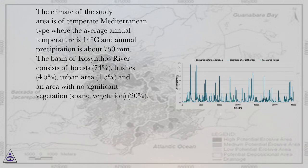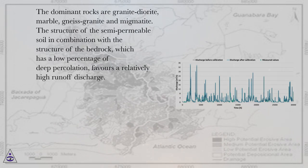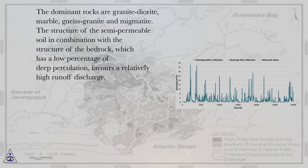The basin of Kosynthos River consists of forests 74%, bushes 4.5%, urban area 1.5%, and an area with no significant vegetation or sparse vegetation 20%. The dominant rocks are granite diorite, marble, gneiss granite, and migmatite. The structure of the semi-permeable soil in combination with the structure of the bedrock, which has a low percentage of deep percolation, favors a relatively high runoff discharge.